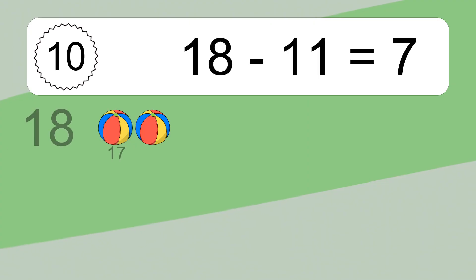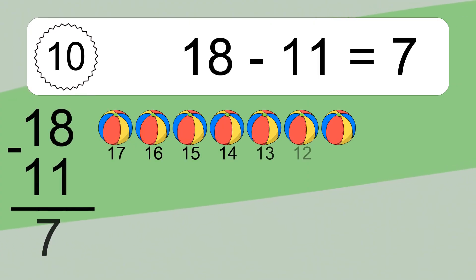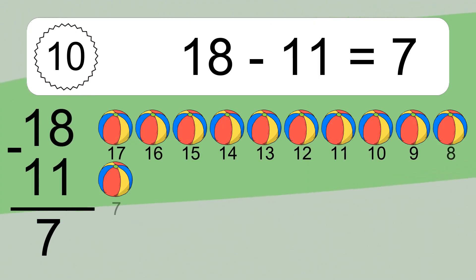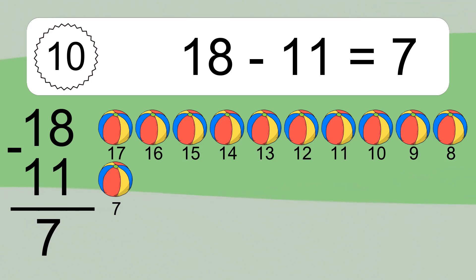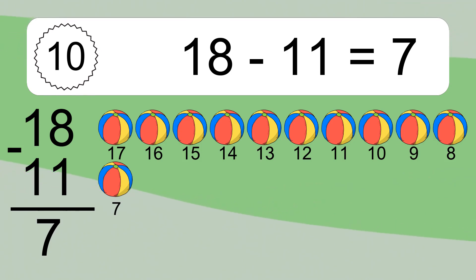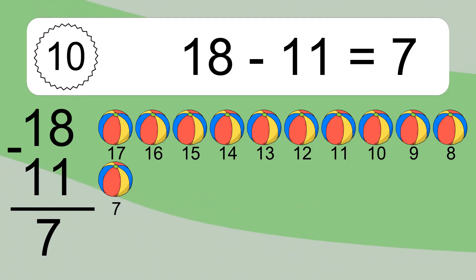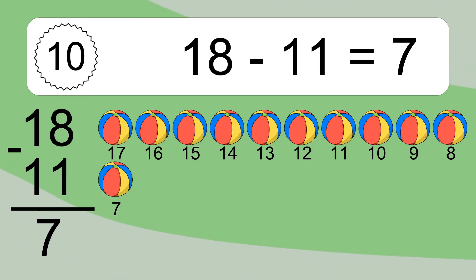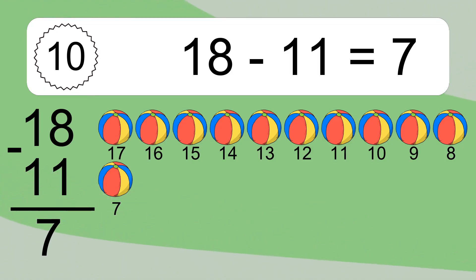18 minus 11 equals 7. Let's count it: 17, 16, 15, 14, 13, 12, 11, 10, 9, 8, 7.